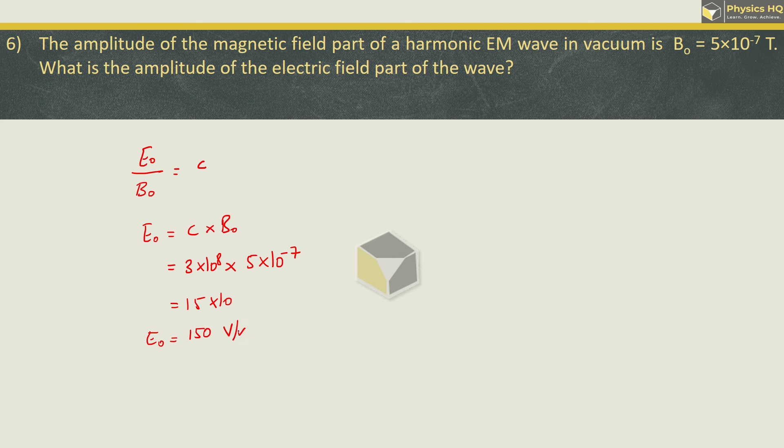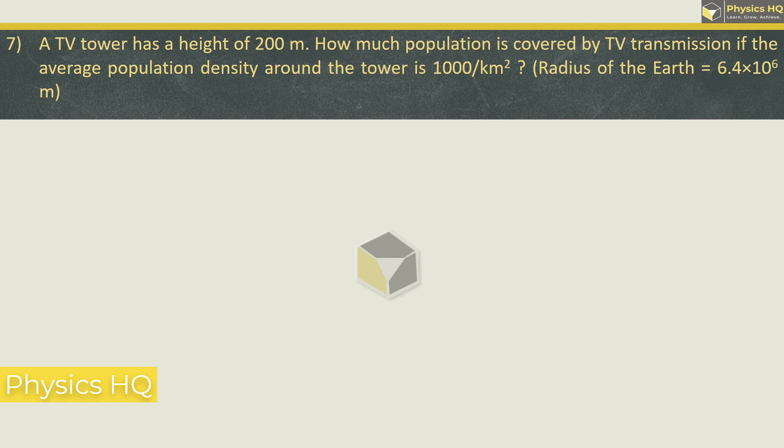Hope you all understood this. A TV tower has a height of 200 meter. How much population is covered by TV transmission if the average population density around the tower is 1000 per kilometer square? Radius of the earth is 6.4 into 10 raise to 6.